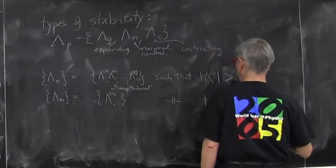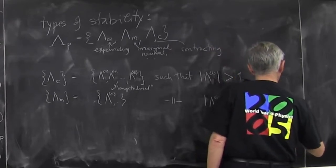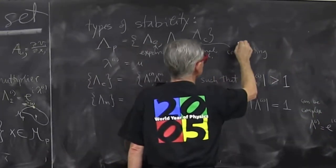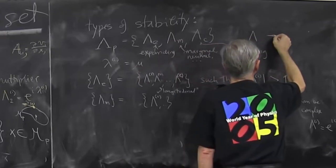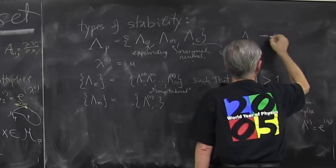It could have a form Li is e to the i omega. In general, we can associate with each one of these things, a sign.